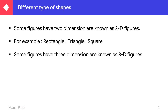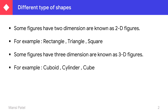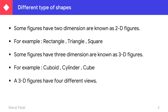Now some figures have three dimensions. Three dimensions means they have three measurements: length, breadth, and sometimes height or sometimes depth. Those are all known as 3D figures. For example, cuboid, cylinder, cube — these all are examples of 3D figures. We can also say plain figures are known as 2D figures.